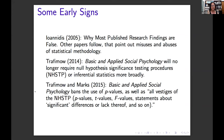In 2014, the journal Basic and Applied Social Psychology published an editorial from the editor-in-chief saying they would no longer require null hypothesis significance testing procedures, or NHSTP, or more broadly, inferential statistics. In 2015, Trafimow and Marks, again in an editorial in Basic and Applied Social Psychology, strengthened this position and banned the use of p-values, as well as — and I quote — 'all vestiges of the NHSTP: p-values, t-values, f-values, statements about significant differences or lack thereof.' This was a bold statement that caught a lot of attention.